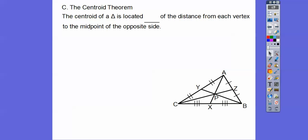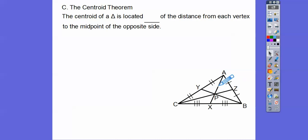So the centroid of a triangle — here we have a centroid of this triangle right here. Notice the markings: one marking says this is the midpoint of this side, so that is a median. The two dashes and two dashes indicate that midpoint, and the three dashes and three dashes indicate another midpoint. Right there is called the centroid.